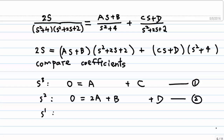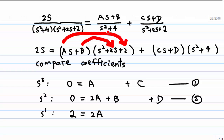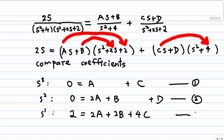Let's compare the coefficient of x. On the left-hand side, we have 2x, so we write 2. On the right-hand side, the x terms come from: ax times 2 giving 2a, then b times 2x giving 2b, and from the second term cx times 4 giving 4c. So equation 3 is: 2 = 2a + 2b + 4c.